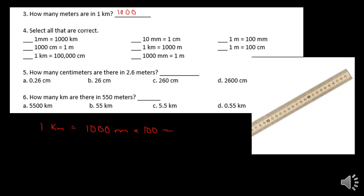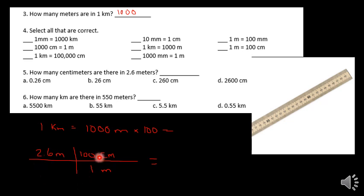Here's a neat way to do the conversions. If you had 2.6 meters and wanted to convert to centimeters, I like to draw grid lines. Put on the bottom what you're trying to get rid of — meters — and centimeters on the top. Then apply the unit conversion: 1 meter equals 100 centimeters. Everything on top you multiply; everything on the bottom you divide. So 2.6 times 100 gives 260 centimeters.